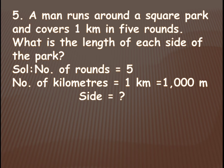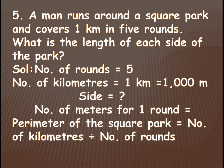For five rounds it is one thousand meters. The perimeter of the square will be for one round. We have to find how much distance he covered in one round, which is the perimeter of the square park. We find this by dividing the total meters by five. For one round: one thousand divided by five.